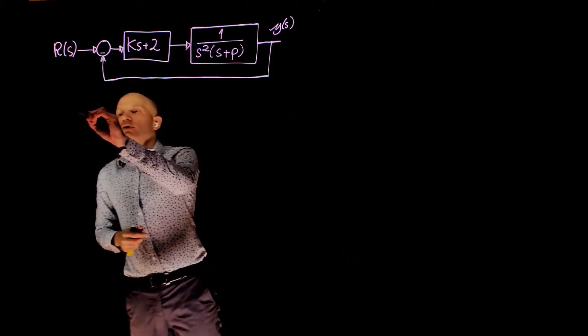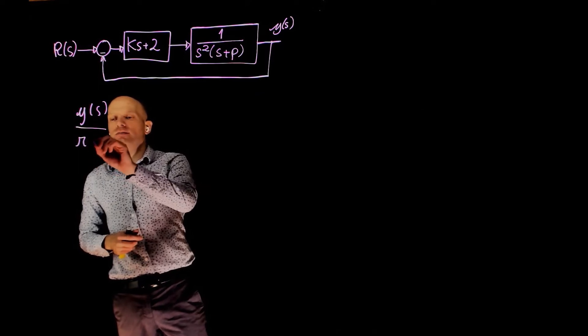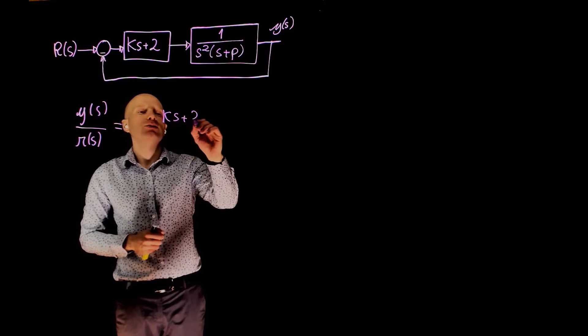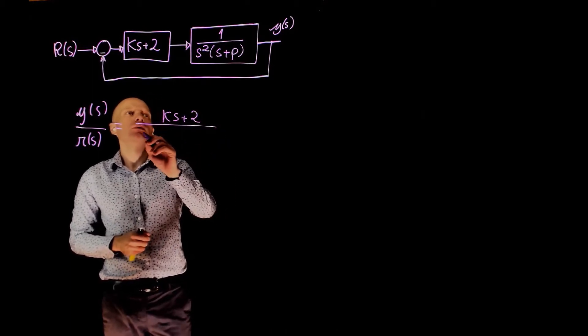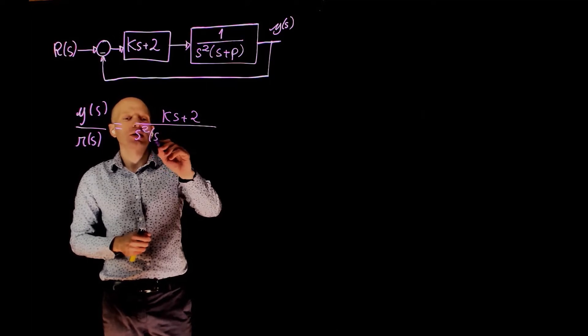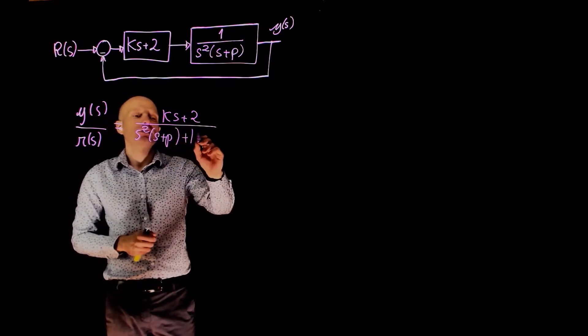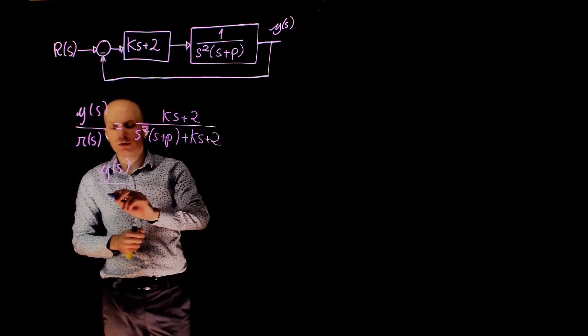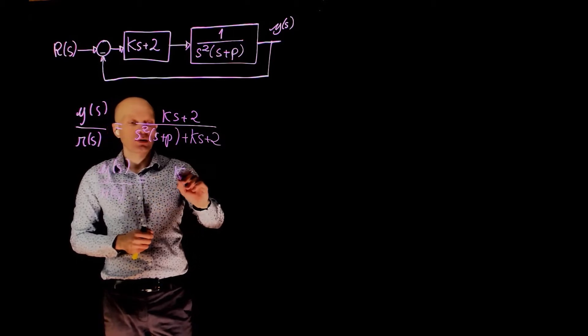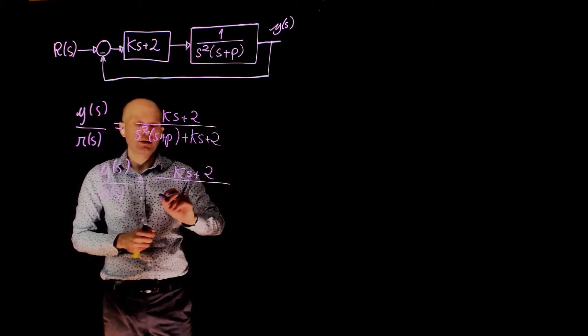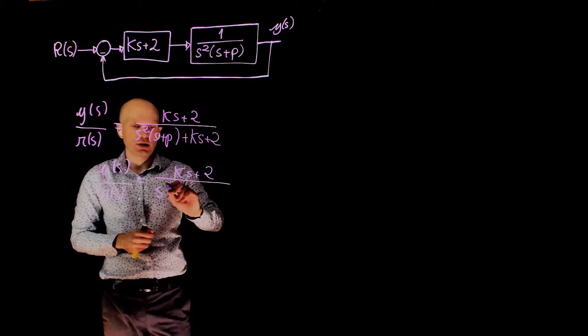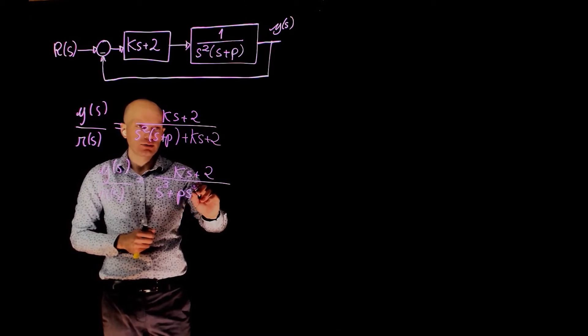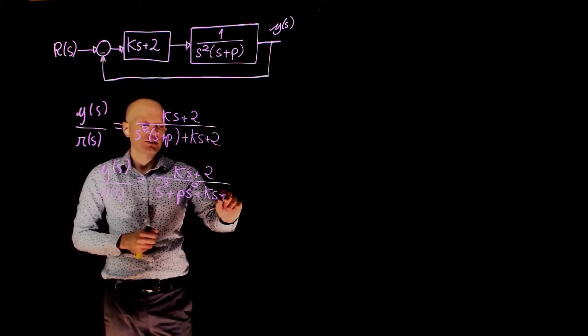In this case, this transfer function is simple. y over r is simply ks plus 2 divided by s squared times s plus p plus ks plus 2, which gives, if you now rearrange the expression, ks plus 2 divided by s to the power of 3 plus ps squared plus ks plus 2.